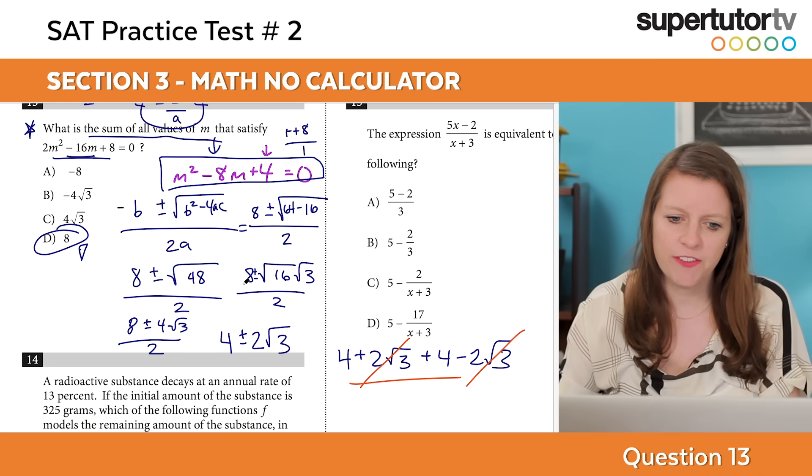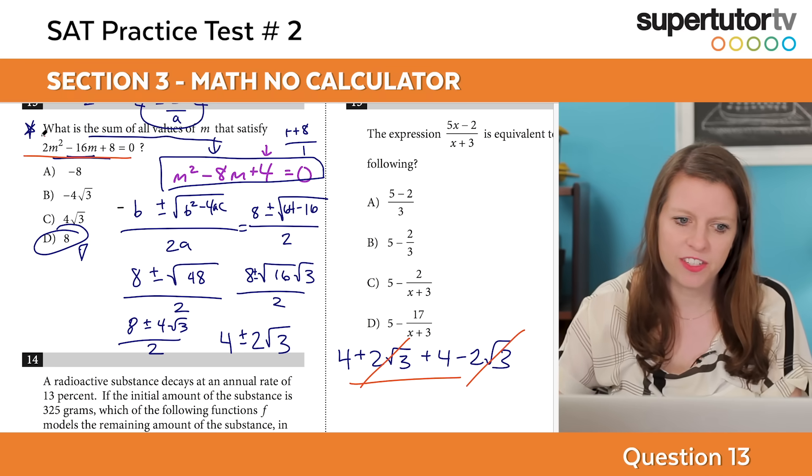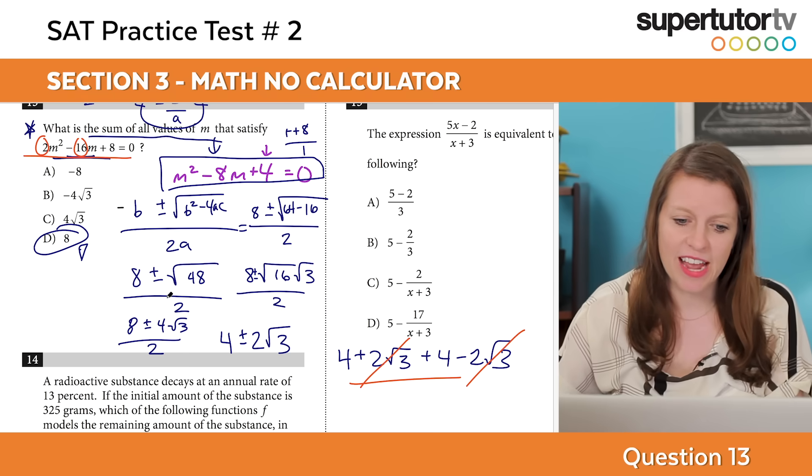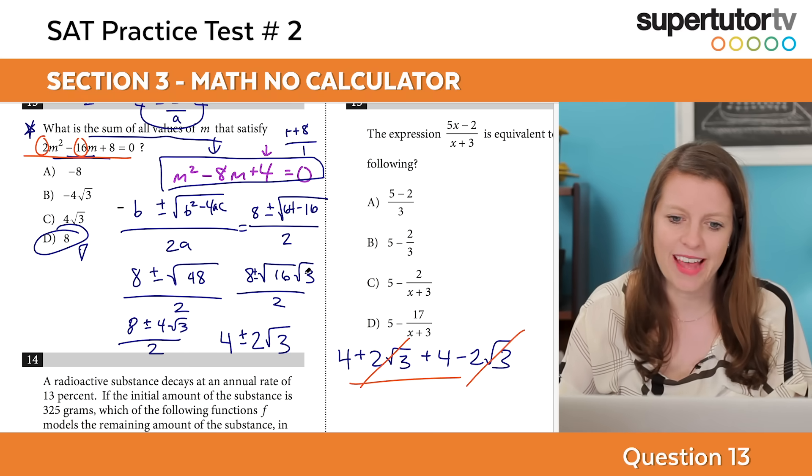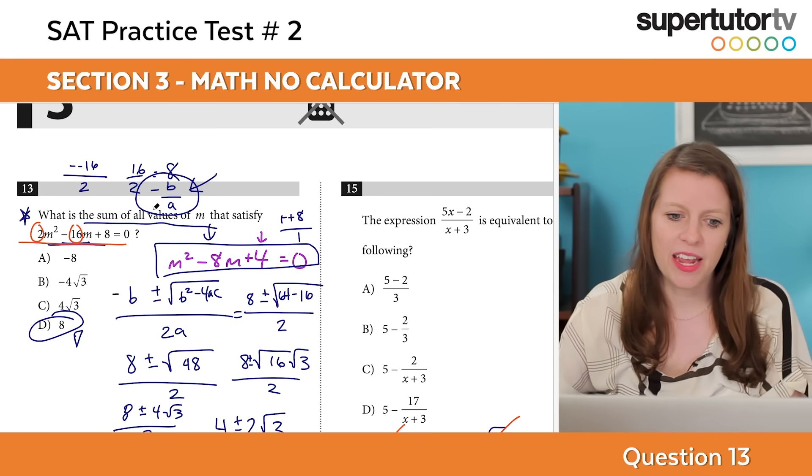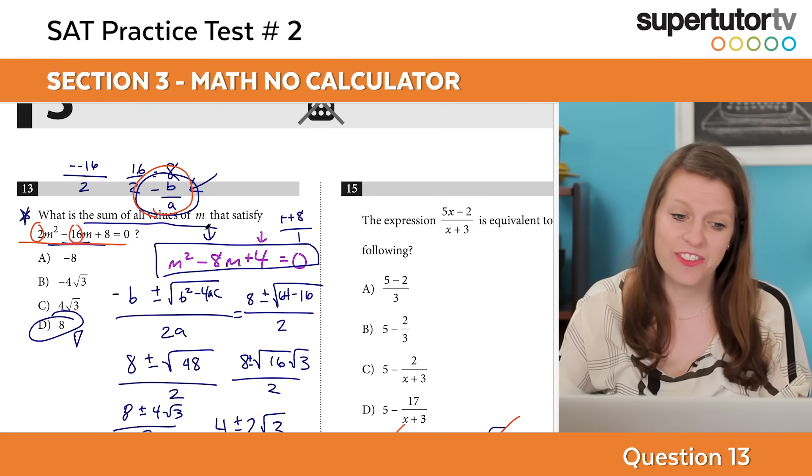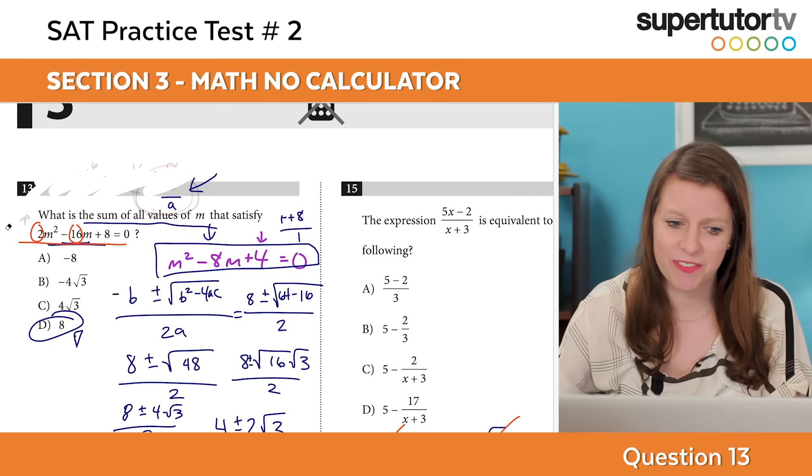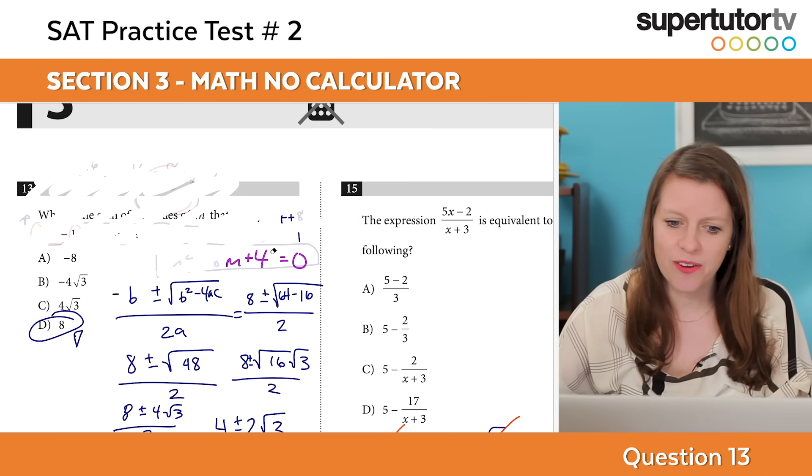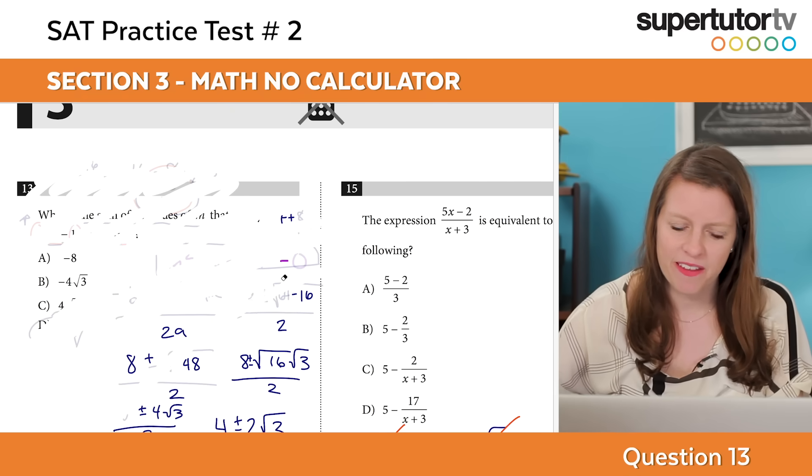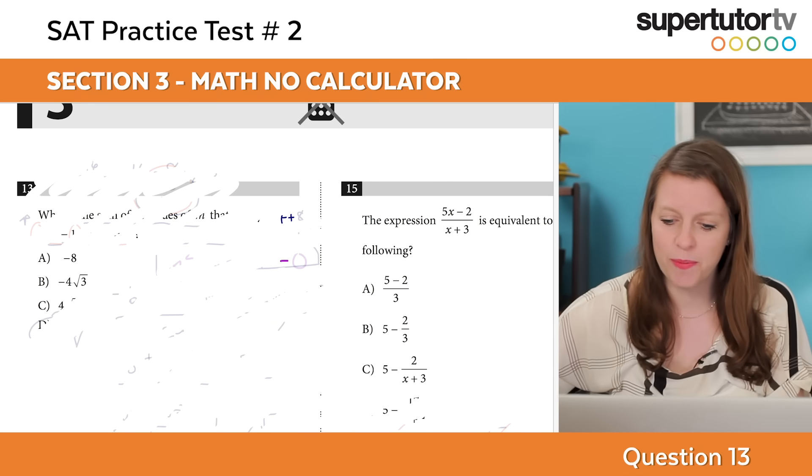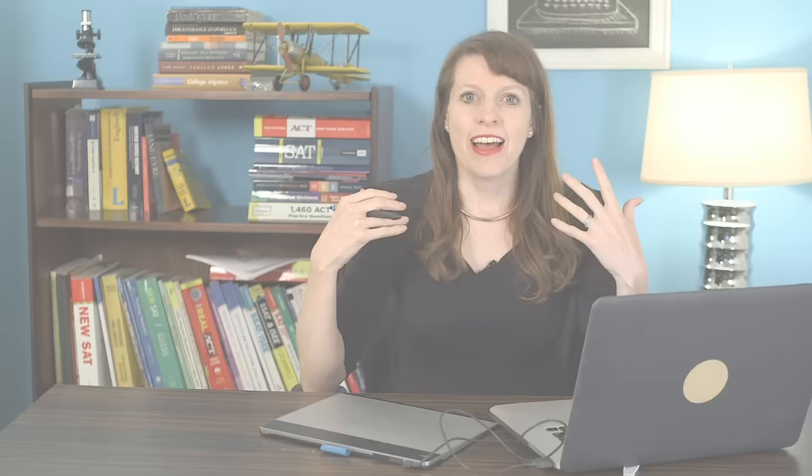If you did it this way, you can check your work. Negative b over a is your super shortcut if you want to memorize that for this really randomly weird specific kind of problem. In any case though, again, you need to know the quadratic formula. If you don't know it, you need to learn it. It's not hard. It just requires your memorization skills.